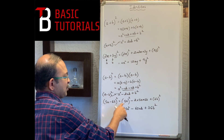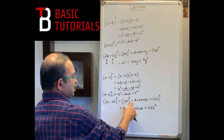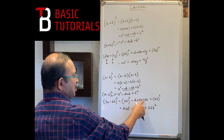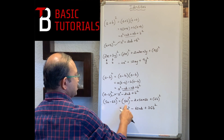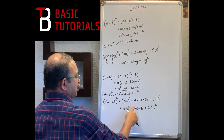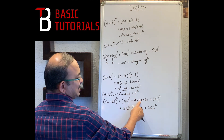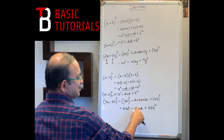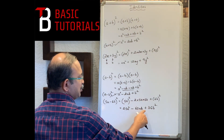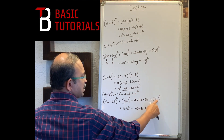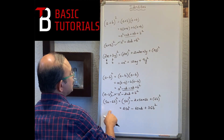For (5a - 6b)²: (5a)² - 2×(5a)×(6b) + (6b)². That gives: 25a² - 60ab + 36b².